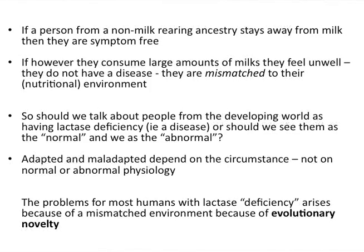This leads to the issue of what's normal, what's abnormal. If a person who doesn't have the persistent gene stays away from milk, they are symptom-free and perfectly normal individuals, appropriate for an environment lacking milk other than human milk. But if they move to an environment, or culture changes such that there are large amounts of milk in their adult diet, they're mismatched to their environment and have symptoms — because they're now living in an environment different to that in which their lineage evolved. Neither is abnormal; there are just people with different variations in the allele which, depending on context, have different physiology.